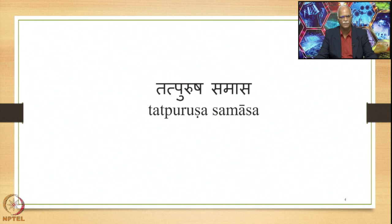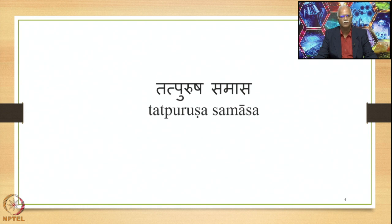We are studying the tatpurusha samasa, which is one of the major types of samasas in Sanskrit. There are four types of samasas in Sanskrit: avyaibhava, tatpurusha, bahubrihi, and dvandva, in that order as stated in the grammar of Panini. The tatpurusha samasa is explained in numerous sutras in comparison with the other samasas, covering the tatpurusha compound, samasanta suffixes, and the svara or accent.